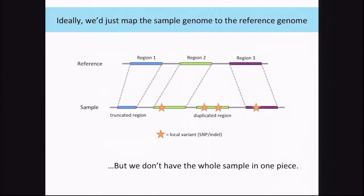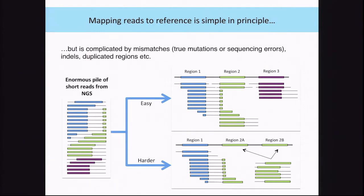Mapping is the next step. It's very crucial since if the reads are not lined up properly to the reference, we won't be able to variant call correctly. Ideally we would have the sample in a single piece and map it directly to the reference genome, where we could see at a glance all the variance — both local like SNPs and indels, and larger-scale structural variants. But of course we don't have the sample in one piece, so we need to process each read independently using a very complicated algorithm.